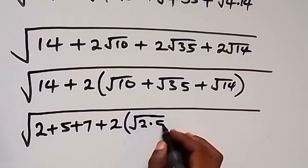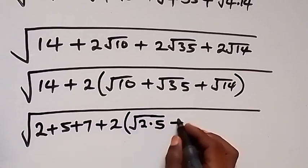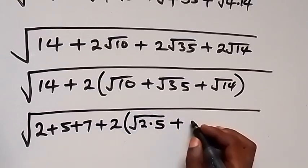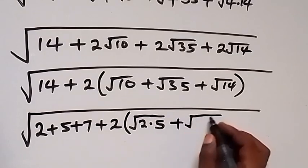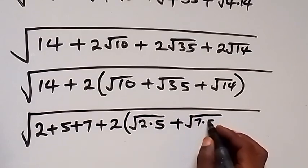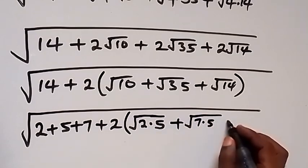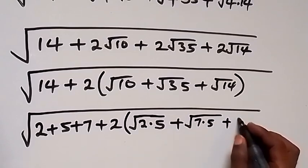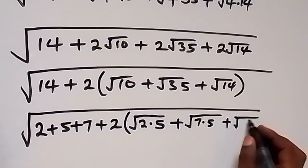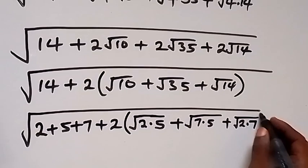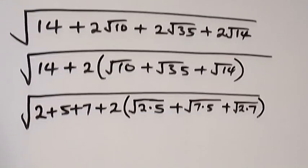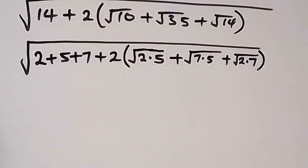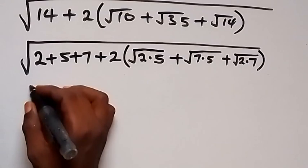We can write root 10 as root 2 times root 5, then plus root 35 we can write as root 7 times root 5, then root 14 can be written as root 2 times root 7. And now here we can rewrite this.